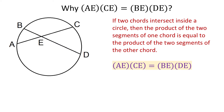In this video, we want to see why AE multiplied by CE is equal to BE multiplied by DE. We will start by connecting the points A and B, and D and C, to form two triangles.